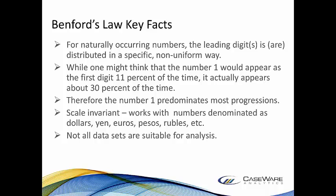Benford's law does not apply to all sets of numbers — it's not bulletproof and cannot apply to any set of numbers. For it to apply, the numbers must reflect the size of some phenomenon; big numbers must refer to big things. There must be no built-in maximum or minimum value, and the numbers must not be labels such as highway numbers, social security numbers, flight numbers, or postal codes. In reality, when we're looking at accounting data, it does conform.